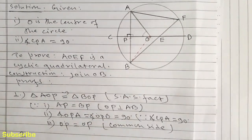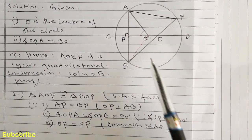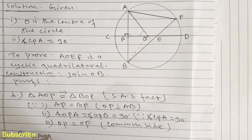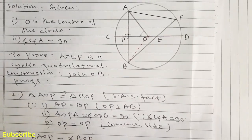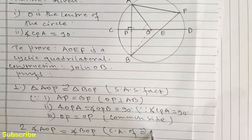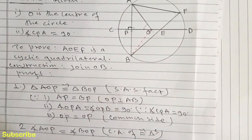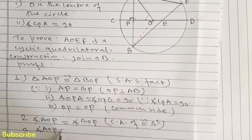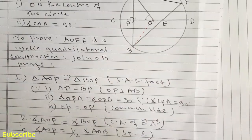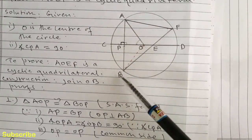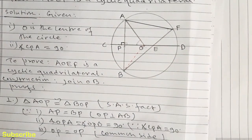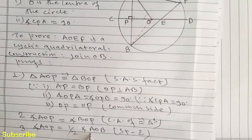In statement number two, we can write angle AOP equals angle BOP. The reason is corresponding angles of congruent triangles. Now in statement number three, we can write angle AOP equals half of angle AOB, from statement number two — since AOP and BOP are equal, angle AOP is half their sum, which is angle AOB.